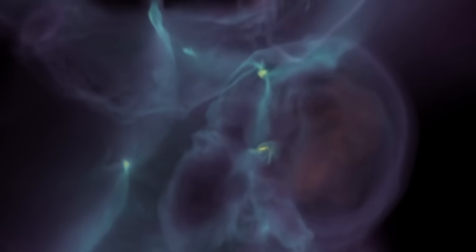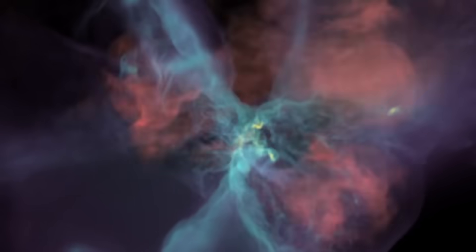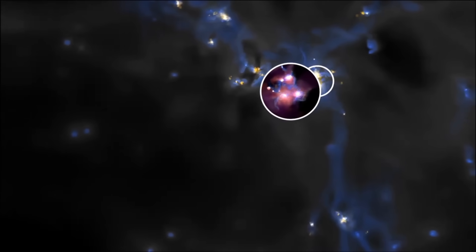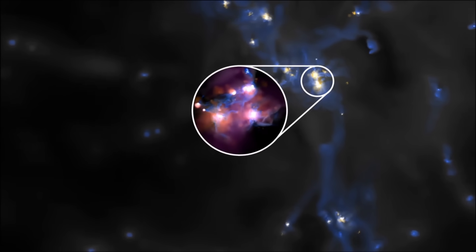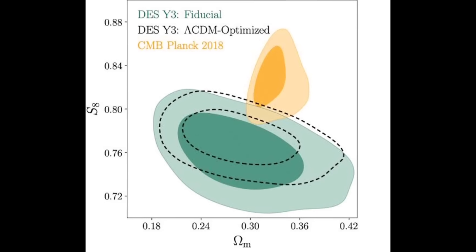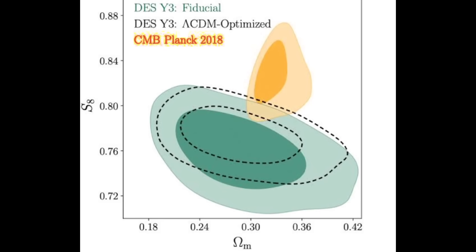S8 is a value that tells us how much matter is clumped together in the universe, especially on very large scales. It helps explain how galaxies and galaxy clusters are spread out and how they've evolved over time. Now, here's the strange part. When scientists study the early universe using data from the cosmic microwave background, they calculate a certain value for S8 based on our current standard model of the universe.